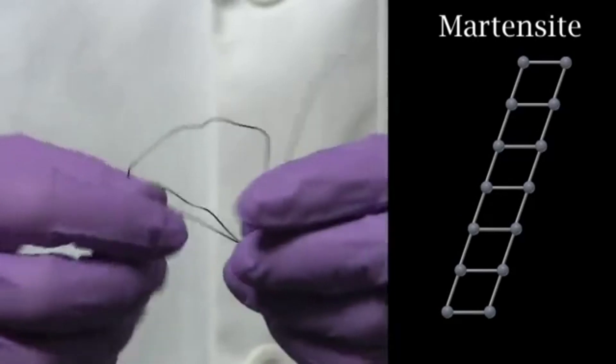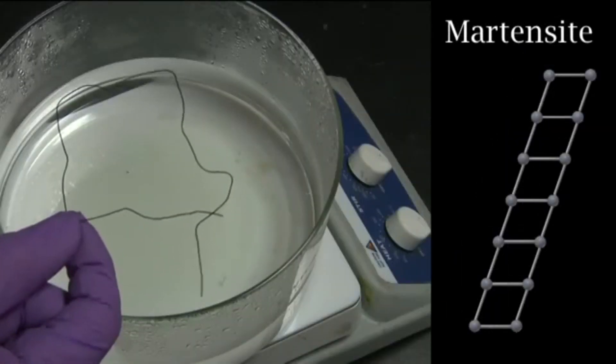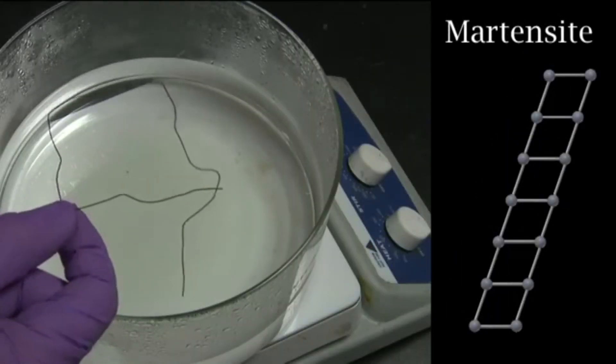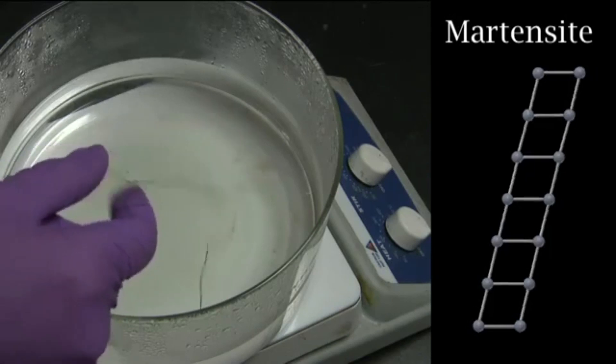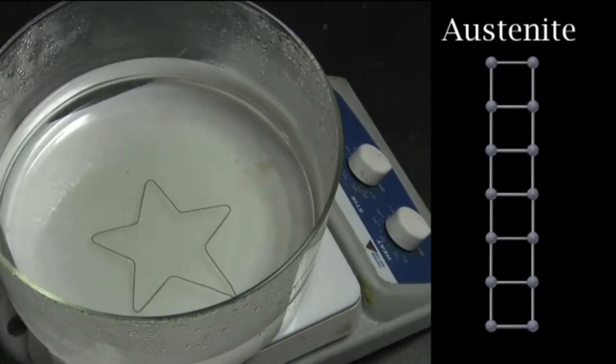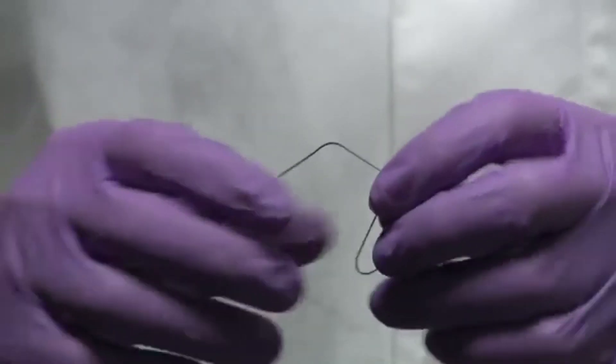This results in a permanent shape change. Now, if we heat up the wire, it goes through the phase change from martensite to austenite, and it returns back to its original shape. We can repeat this for almost any shape we want.